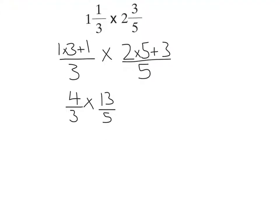Now I can just multiply these together. Multiply the numerators together and the denominators together: 4 times 13 over 3 times 5. So 4 times 13 is 52, and 3 times 5 is 15.